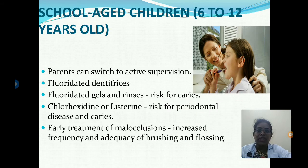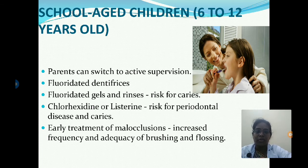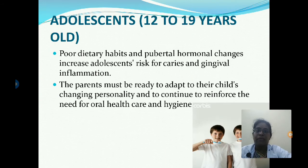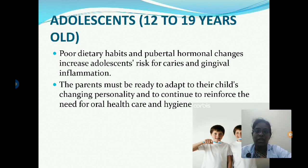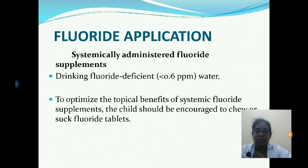For school-age children six to twelve years, parents can switch to active supervision, introducing fluoridated dentifrices and fluoridated gels. Fluoride rinse or Listerine mouthwash can be given for patients with risk for periodontal disease and caries. Early treatment of malocclusions includes increased frequency and adequacy of brushing and flossing. For adolescents twelve to nineteen years, dietary habits and pubertal hormonal changes increase the risk for caries and gingival inflammation; parents should reinforce the need for oral care.